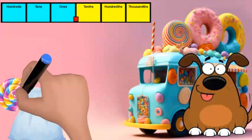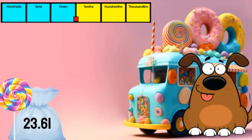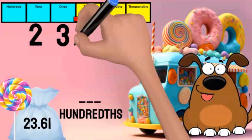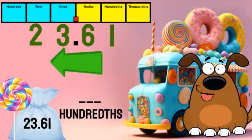The first order for lollipops was for 23 and 61 hundredths of a pound. Since each lollipop is one hundredth of a pound, I need to figure out how many hundredths are in 23 and 61 hundredths. First, I will place the number in the place value chart. Since I need to know how many hundredths are in this number, I find the digit in the hundredths place and look at all the digits to the left. I can see that there are 2361 one-hundredths in the number.